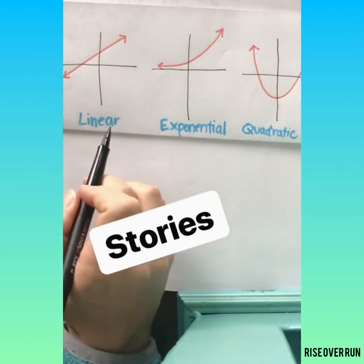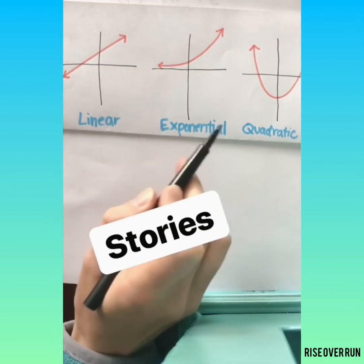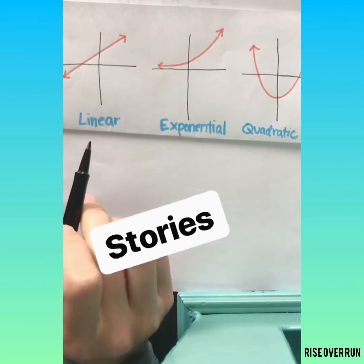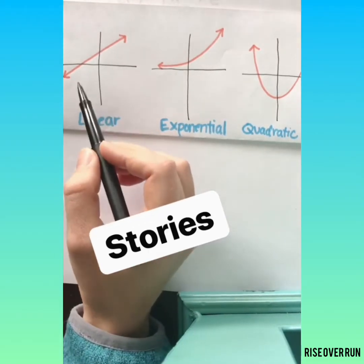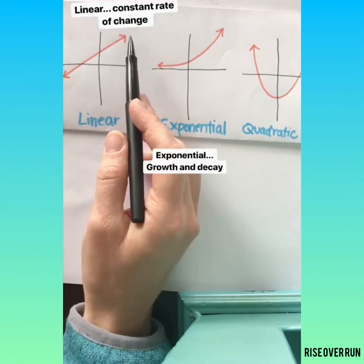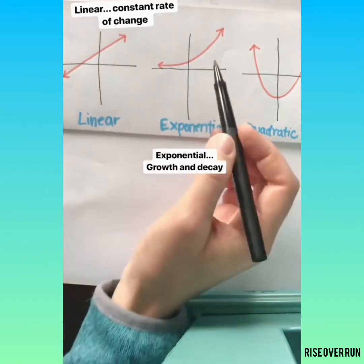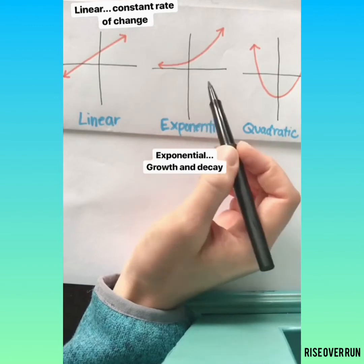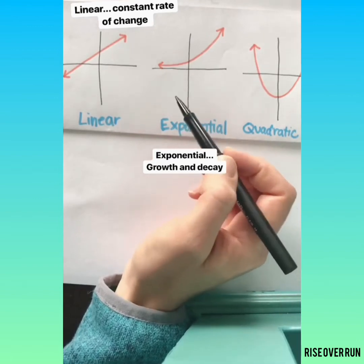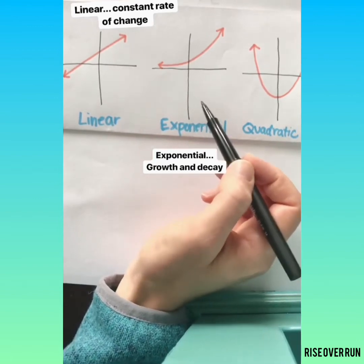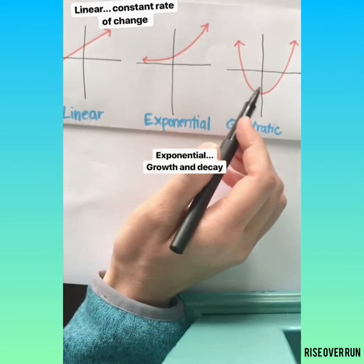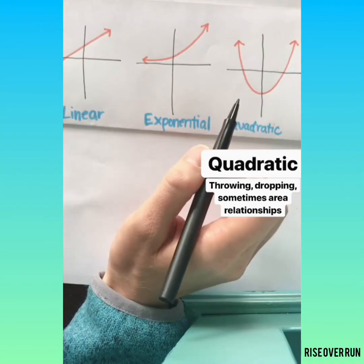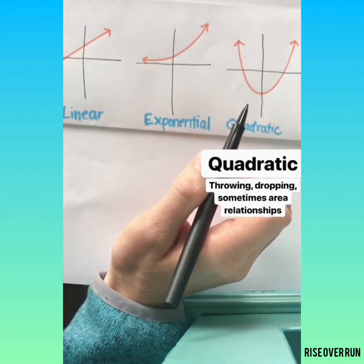When you're looking at stories to identify what type of function they represent, look for some key phrases or think about how the relationship is between the variables. For linear relationships, you'll have a constant rate of change. For exponential, think of things like growth and decay. You're going to be multiplying by the variable over and over. For quadratic, this usually represents things that are being thrown or dropped. It can also represent some relationships involving area.